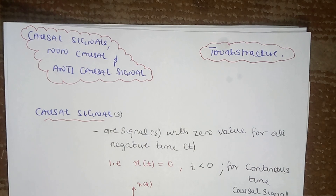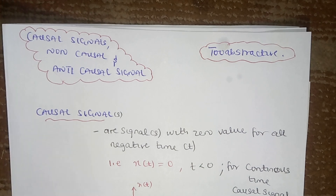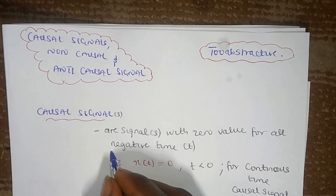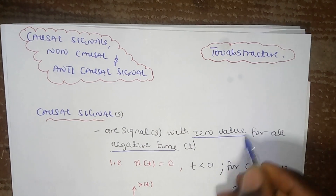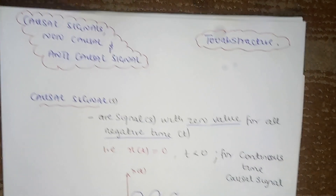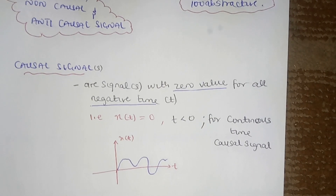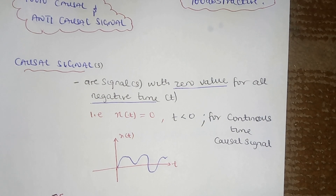The first one is a causal signal. What are causal signals? Causal signals are signals with zero value for all negative time. That simply means that on the negative axis of the time axis, it doesn't have a value.